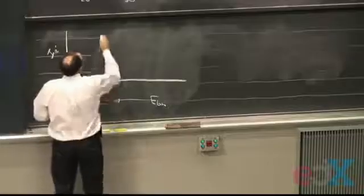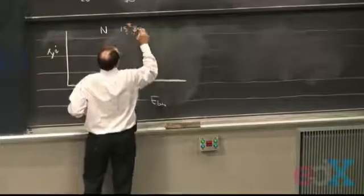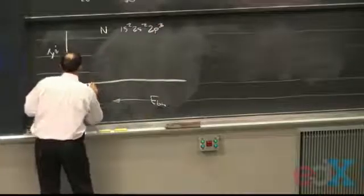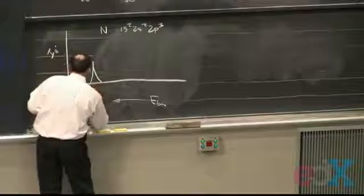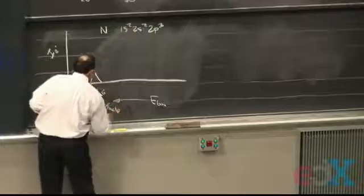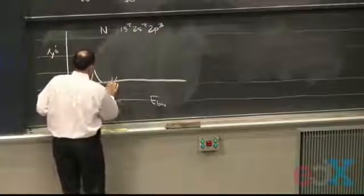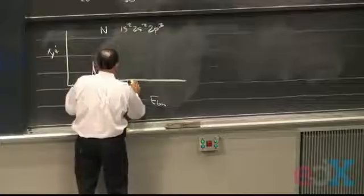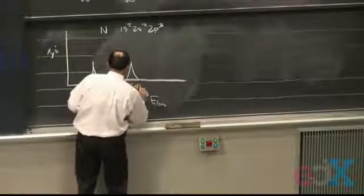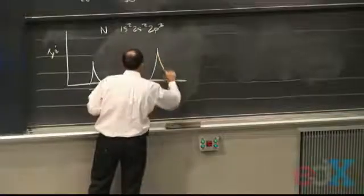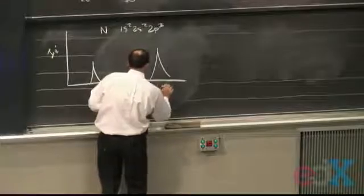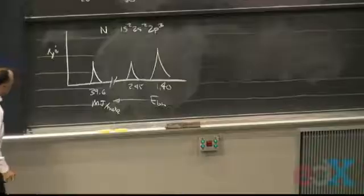And if this were nitrogen, remember that's 1s², 2s², 2p³, I'd get the following spectrum. A peak down here at 39.6, these are in megajoules per mole. And then I'll break the scale here because it's a big jump. I'll have a peak here at 2.45 and then a peak here at 1.4.